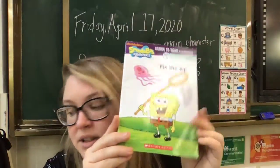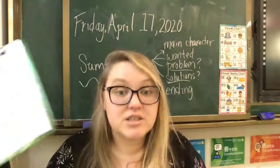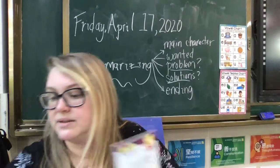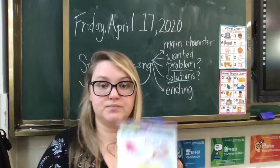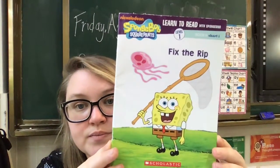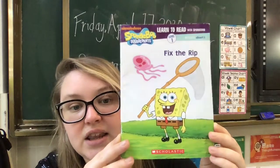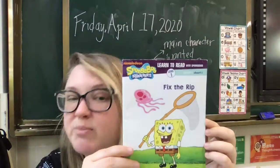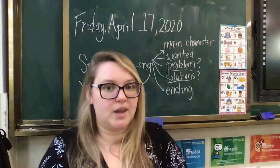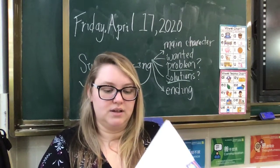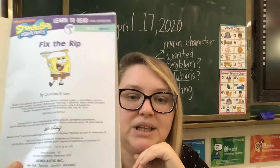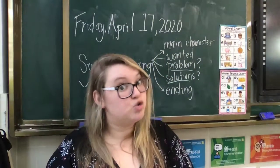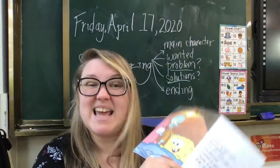So this is another Spongebob book and I will do this with you — you just listen and pay attention. Let's find a good marker. This is 'Fix the Rip,' a short iBook. The main character is — it says it right on the front — Spongebob Squarepants, but we call him Spongebob. Main character: Spongebob. This is by Quinlan B. Lee. We always want to know who is the author and we try to say their name. It's okay if it's not perfect — names are hard.